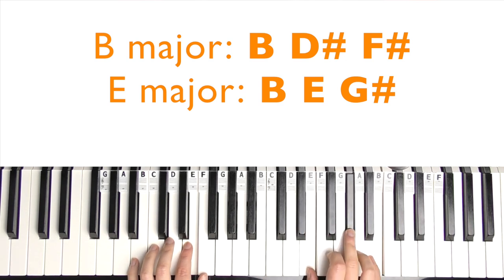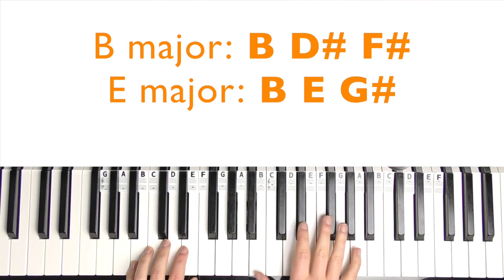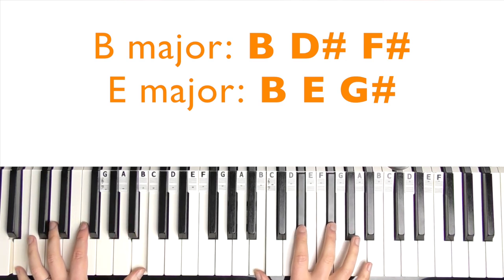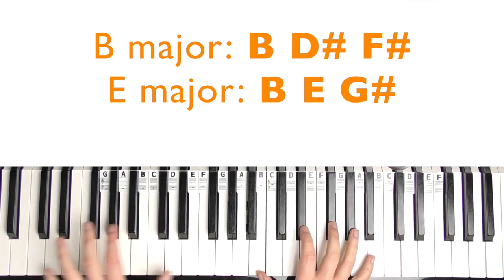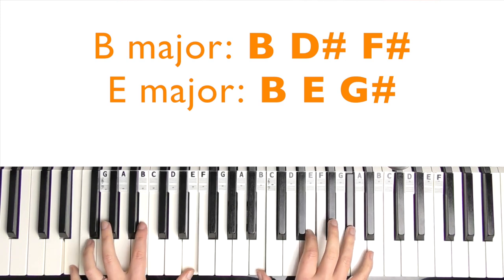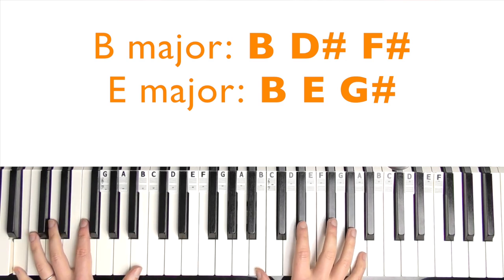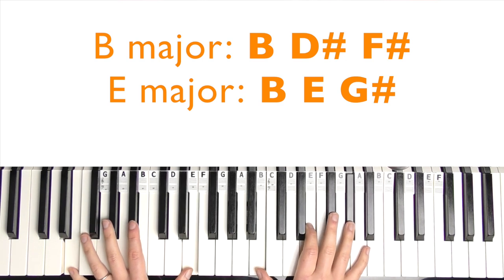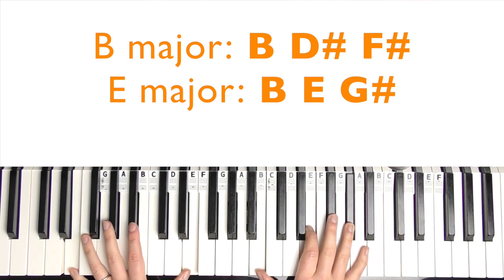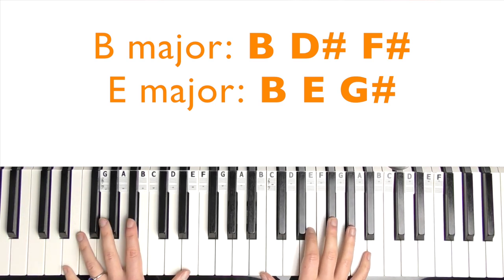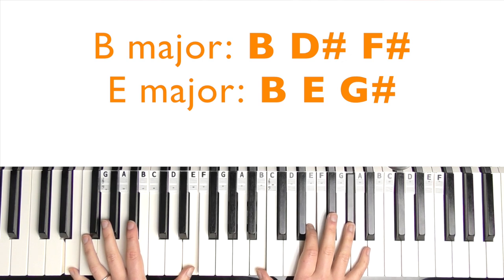keep your thumb on the B and then we need E and G sharp. E major you could play there, but it's not quite the right sound. The chord change is a bit more subtle like that, so we've got B major, you can choose to play octaves in the left hand if you want. And then E major, second inversion. Born in the USA I was born in the USA. Born in the USA I was born in the USA.